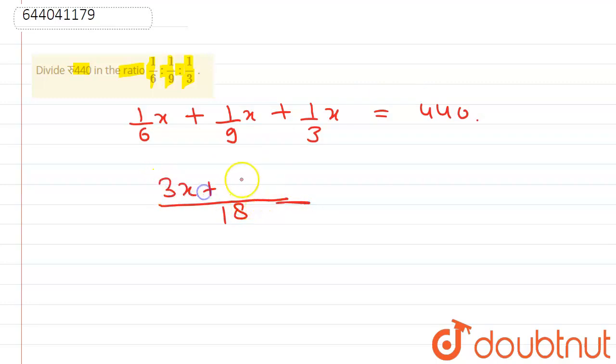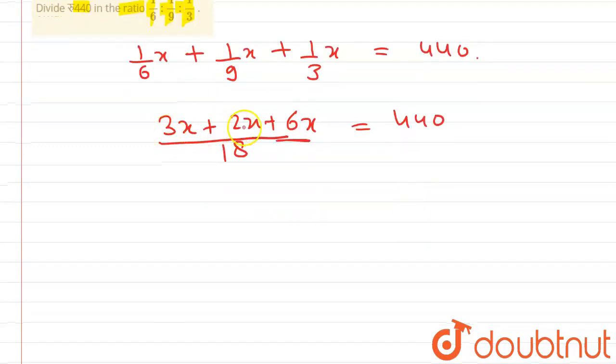Now by taking LCM we get 18. So 3x plus 2x plus 6x is equals to 440. Here 3 plus 2 that is 5, plus 6 that is 11x equals 440 into 18. So here x is equals to 440 into 18 by 11.